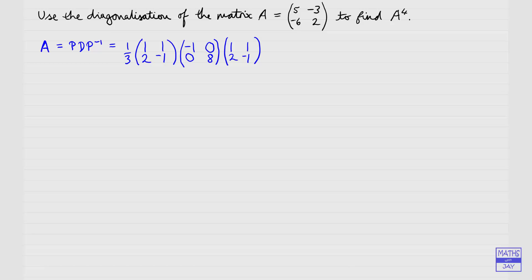So that's our way of writing A in terms of our diagonal matrix. Let's remind ourselves of the formula we're going to use. For A raised to the power of N, when A is expressed in this diagonal form, we have A^N = P · D^N · P^(−1).